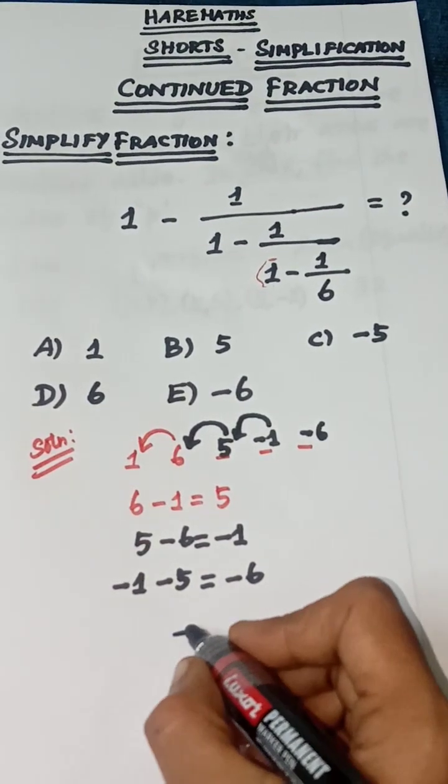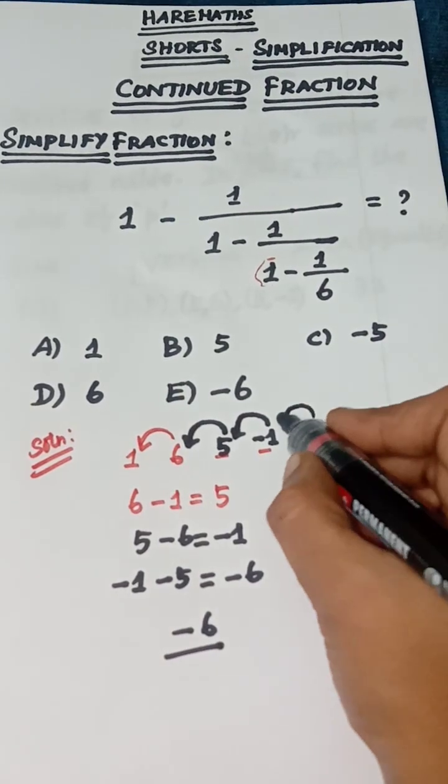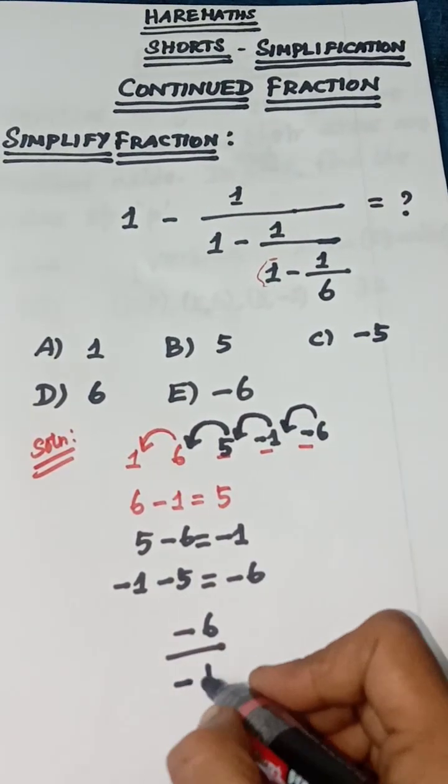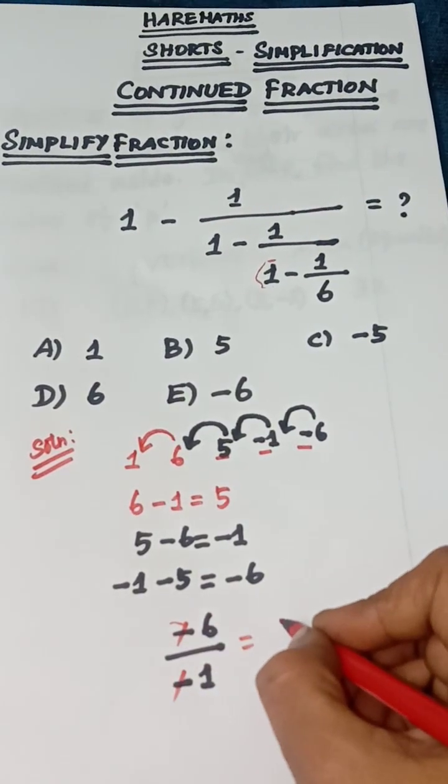Last one minus 6, divide, previous 1 is minus 1. Minus minus cancel equal to 6 by 1 plus 6.